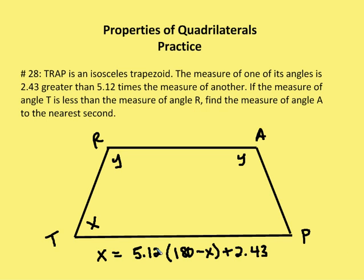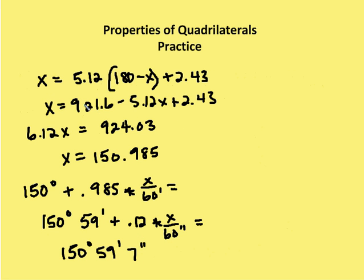So now all we have to do is solve for X. I have 5.12 times 180 minus X plus 2.43. And I go through the calculations. 5.12 times 180 is 921.6 minus 5.12X plus 2.43.